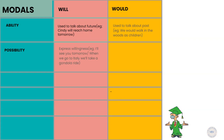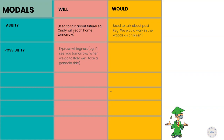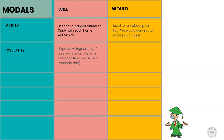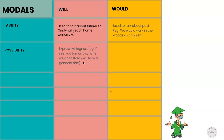Will and would can also be used to show possibility or express willingness. For example: I'll see you tomorrow — here you are showing your willingness or wish to see someone, and there is also a possibility that you will see them. Another example: When we go to Italy, we'll take a gondola ride — this is a sentence showing possibility that once we reach Italy, it's possible we can take a gondola ride.